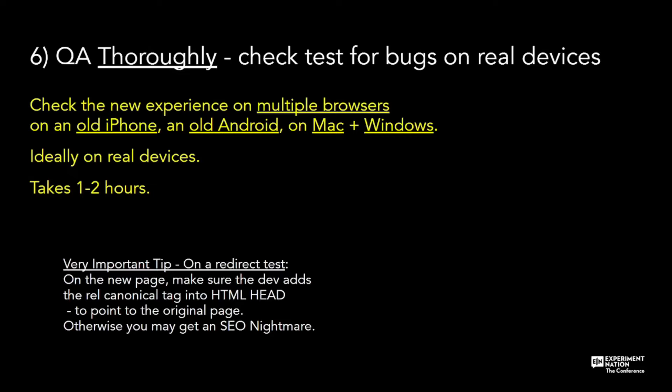Another big tip: this doesn't appear in documentation of testing tools, but it's very, very important. If your test happens to be a redirect test and you're creating a new page, make sure the new page has a rel canonical tag in the HTML head. Ask your dev to look into this and add it to the new page — it basically tells search engines that this isn't the original page, they shouldn't index it, and points them to the original page. Otherwise search engines will index this page, and it's a nightmare for SEO. Once that's indexed, it's very hard to get out.